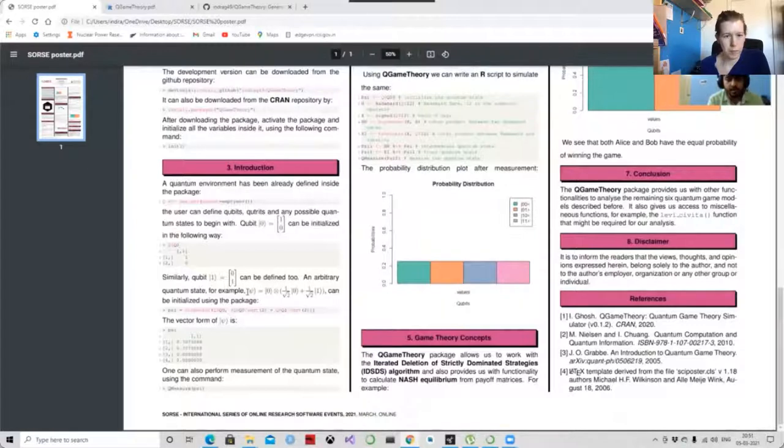Suppose you want to write an arbitrary quantum state, which is psi, which is actually the Kronecker product between the qubit 0 and the sum of 1 by root 2 qubit 0 and 1 by root 2 qubit 1. So this can be easily implemented using the R language with this package. You can also see the vector form just by writing psi in the R console.